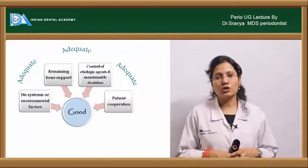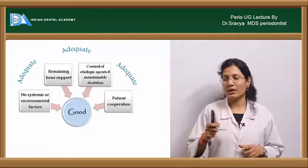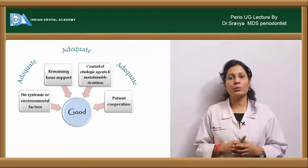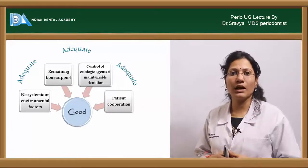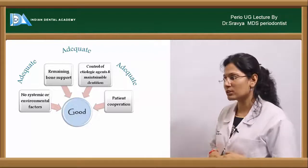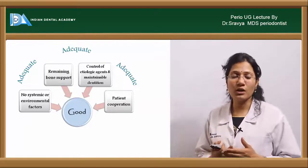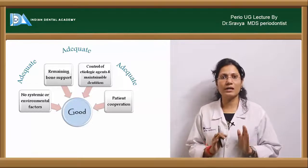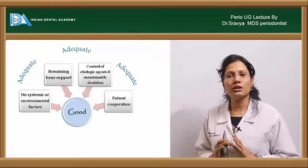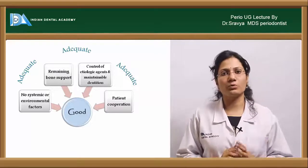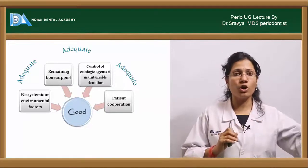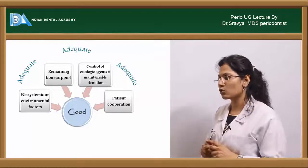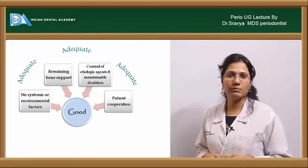When you call it a good prognosis, certain criteria or factors are at an adequate amount. For example, you have adequate remaining bone height, adequate bone support, adequate control of local factors, and the patient can maintain oral hygiene to an adequate level. The patient can adequately cooperate with you — not to an excellent level, but with adequacy — and there is no systemic or environmental factors.